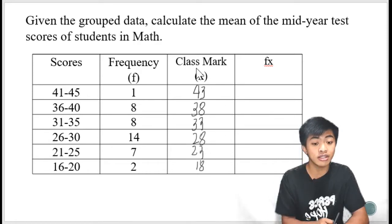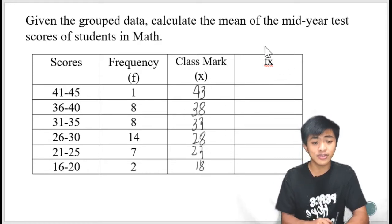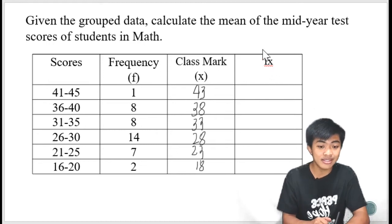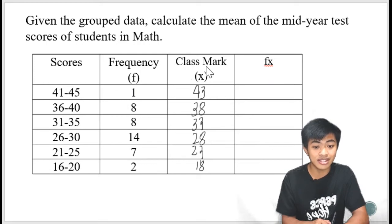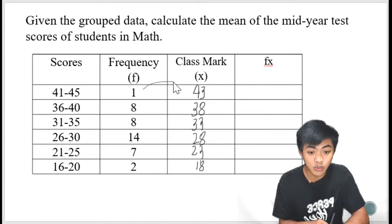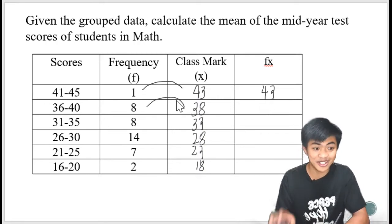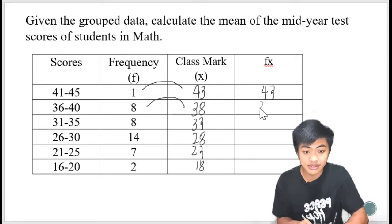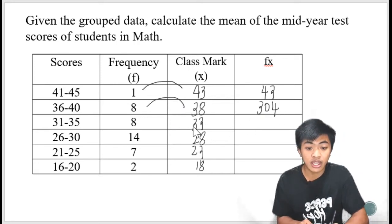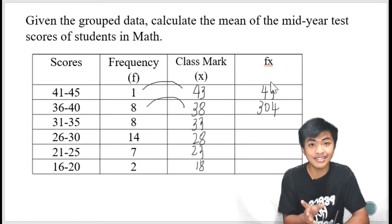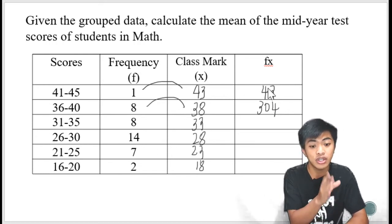Kompleto na natin yung under the class mark. The next thing we're going to do is to compute for fx. And fx, that is simply the product of f and x. That is multiplying the frequency to its corresponding class mark. So ganito lang yan. That is 1 times 43, that is 43. 8 times 38, kailangan lang calculator. It's 304. And then same ang gagawin. Multiply until makompleto yung column.